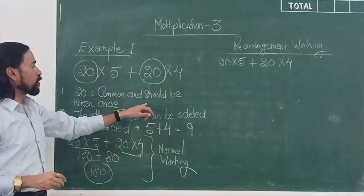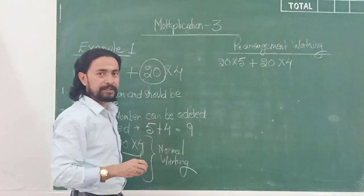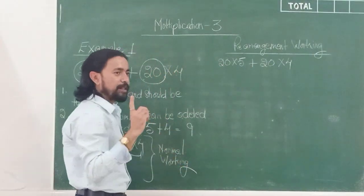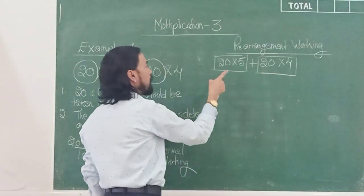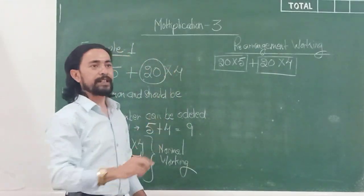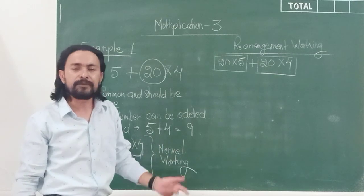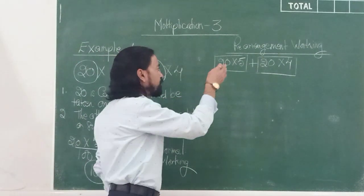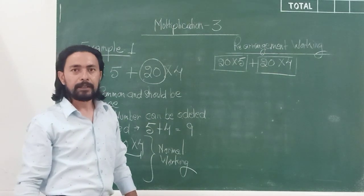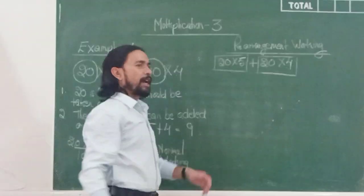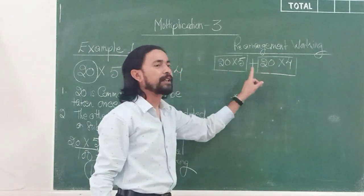What do I mean that 20 is common and should be taken once? I am not taking 20 and adding it to 20. I am taking 20 as once because in both cases I have a common number, which is 20. I am multiplying 5 by 20 and 4 by 20 — why not just add 5 and 4 and directly multiply by 20? The answer will still be the same, because in both cases I am multiplying by the same common number.